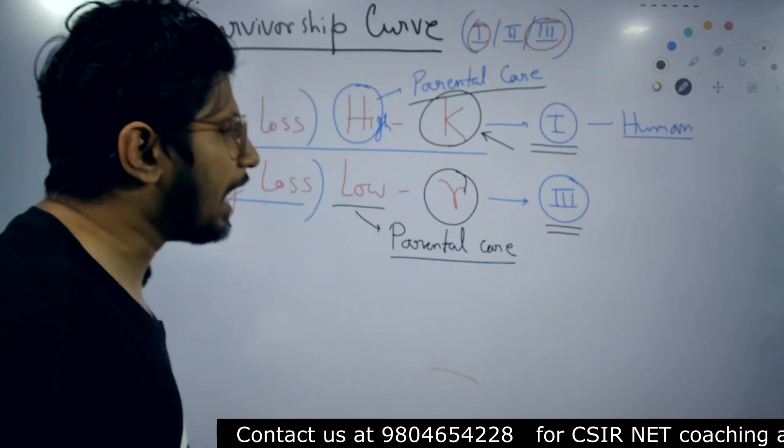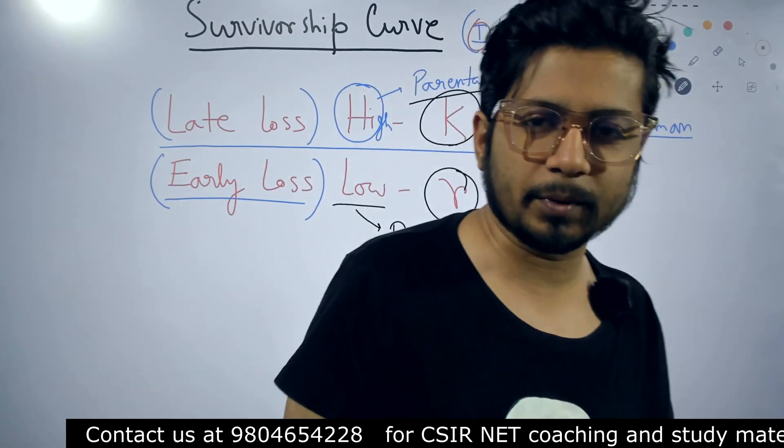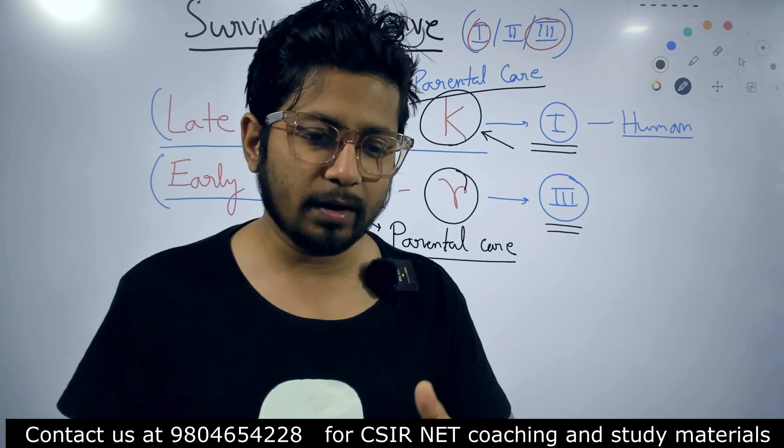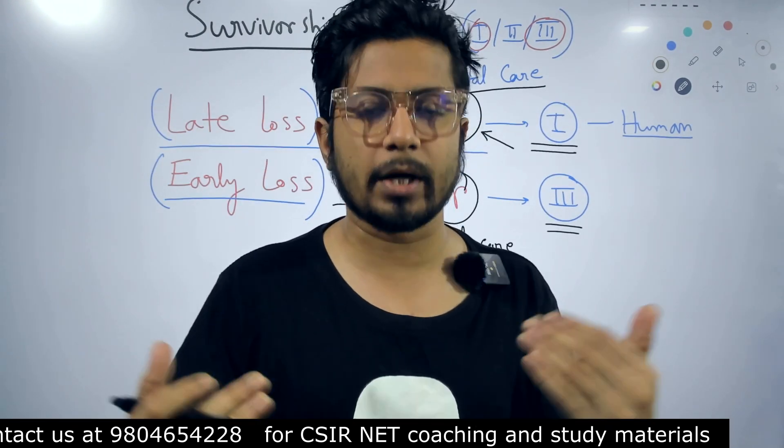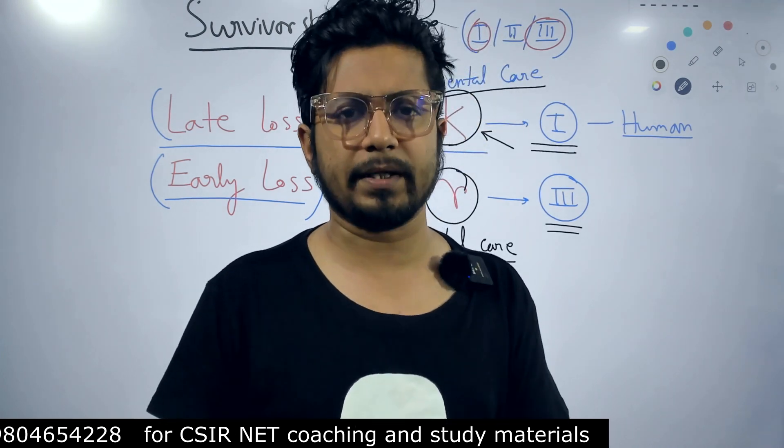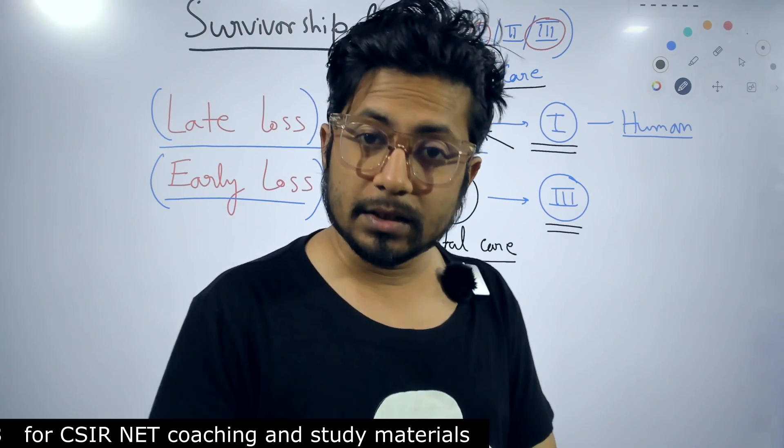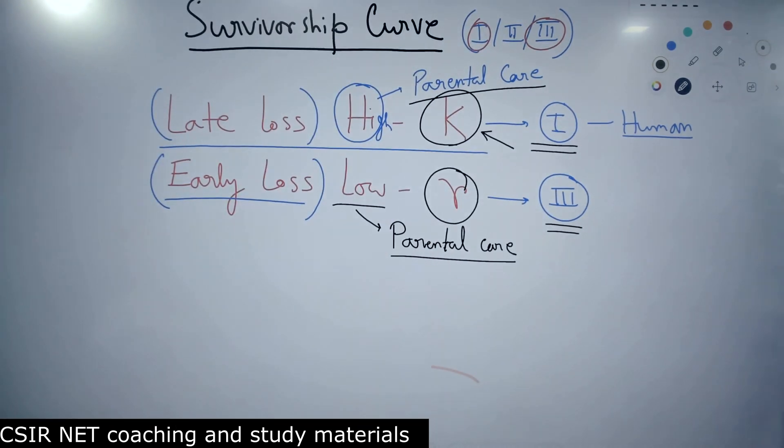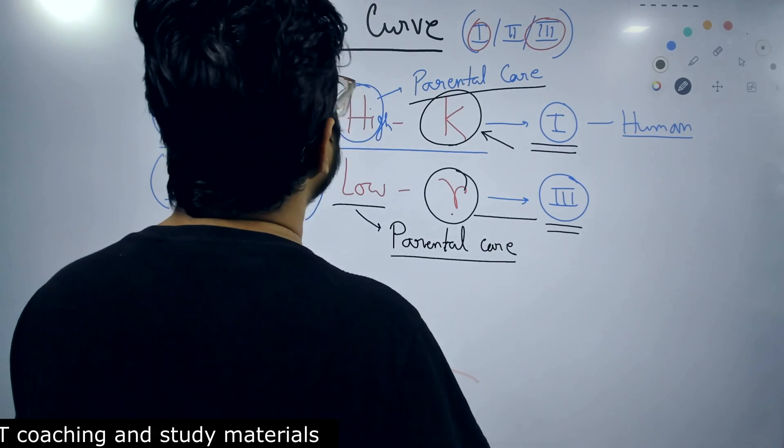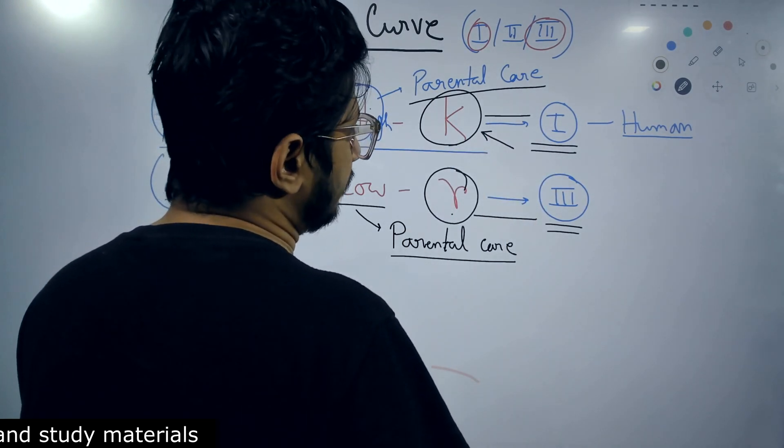While Type 3 survivorship curve individuals, their population is governed by R. R is the net reproductive rate, so we generally say they belong to faster reproduction. They utilize faster reproduction to produce many offspring. They reach their reproductive age quite early in their life. They follow R-selected pattern. So R-selected pattern comes with Type 3 survivorship curve, K-selected pattern comes with Type 1 survivorship curve.